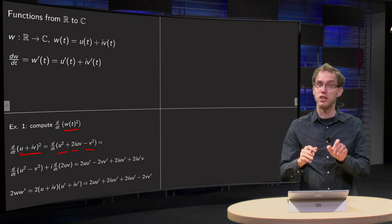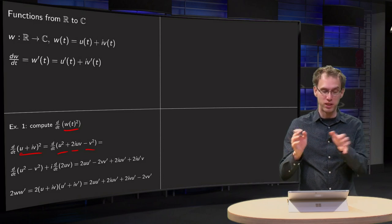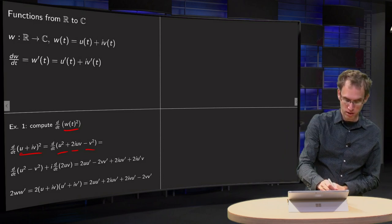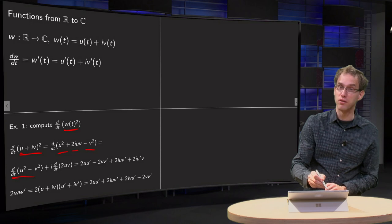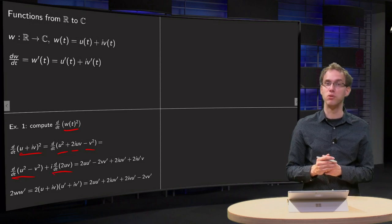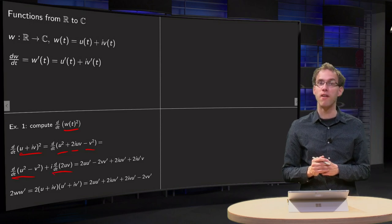Split real and imaginary parts and differentiate those separately: d/dt of (u² − v²) plus i times d/dt of (2·u·v).